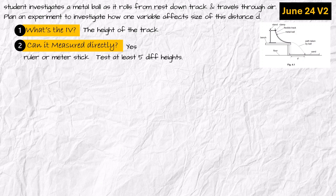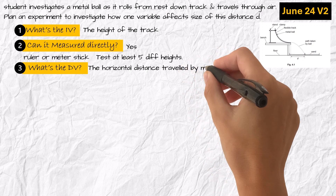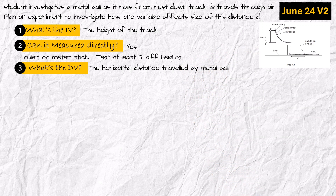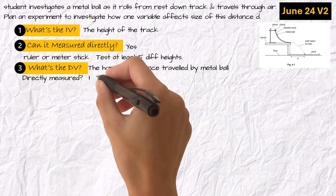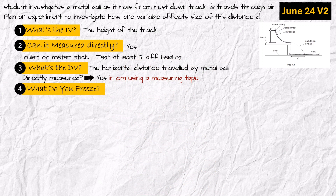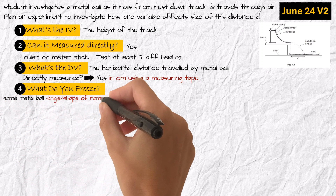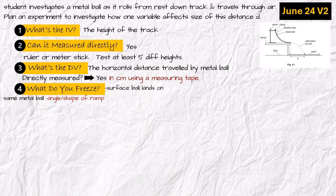Number three: what's the dependent variable? The horizontal distance traveled by the metal ball — distance D in the diagram. Is it directly measured? Yes, in centimeters using a measuring tape. Number four: what do you freeze? Write any two from the following: the same metal ball, the angle and shape of the ramp, the surface the ball lands on — for example, always the same tray of sand — and the release point, always from rest with no push.